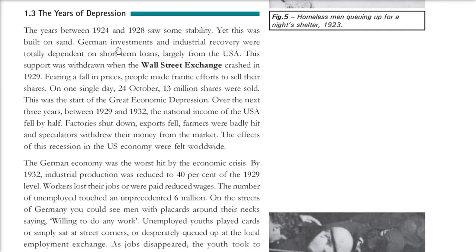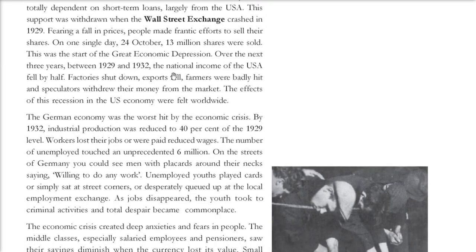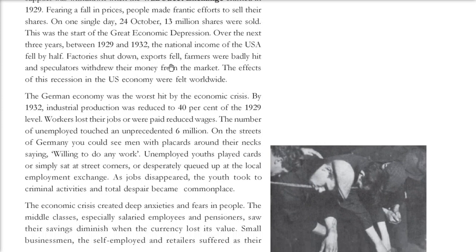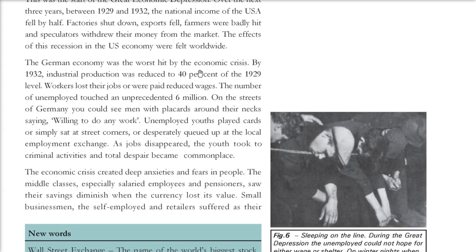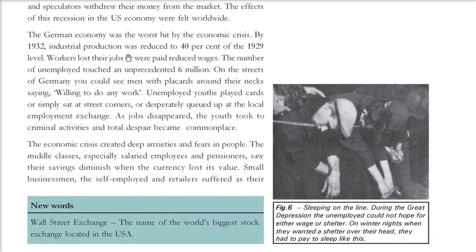But stability did not last long. The Wall Street Exchange crashed in the USA, and its ripple effect came to Germany and other countries. The national income fell by half, factories shut down, exports fell, and farmers were badly hit. Speculators withdrew money from the market, sending the German economy into crisis. By 1932, industrial production was reduced to 40% of its 1929 levels, and the number of unemployed reached 6 million. This economic crisis created anxiety and fear in people.